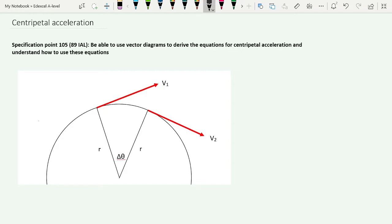So this is the algorithm mechanics one, specification 0.109. We have to use vector diagrams to derive the equation and then understand how to use it. If you're doing international A-level, it is specification 0.89.